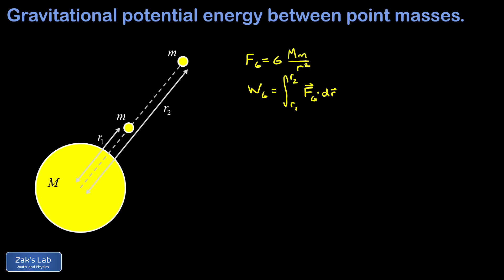It's helpful to visualize this with an intermediate position between the starting and finishing positions. So there's our little m, just at some intermediate position, and the force of gravity is pulling opposite to its direction of motion because it's an attractive force.